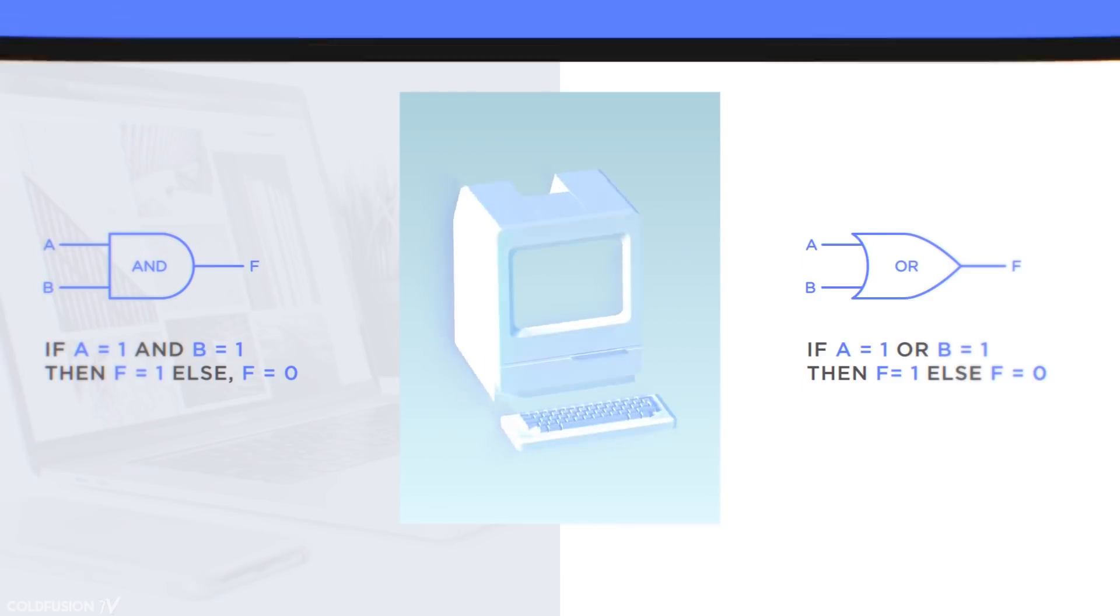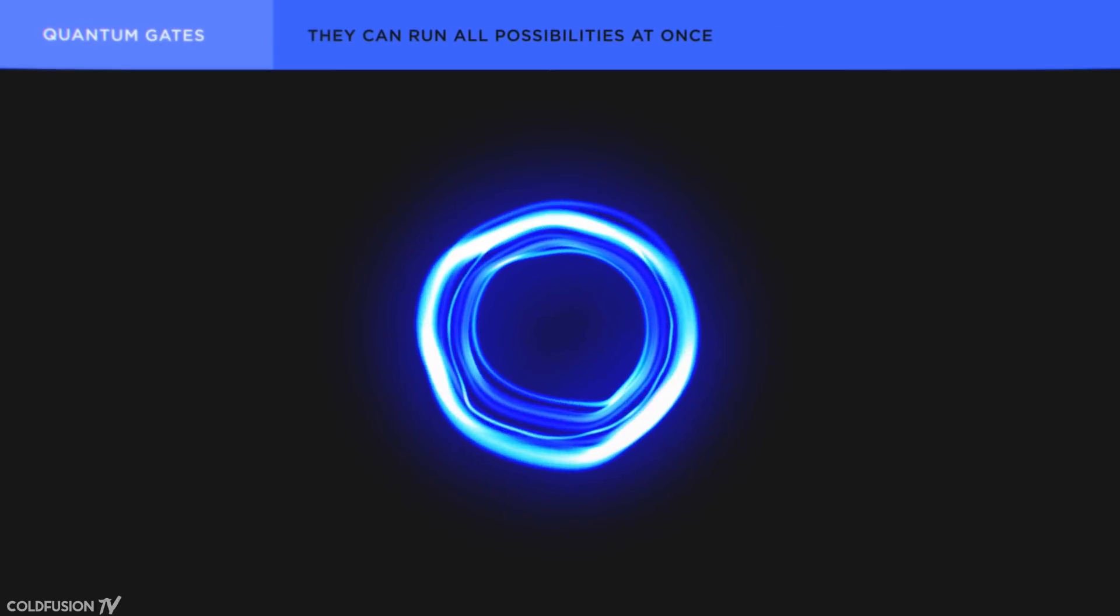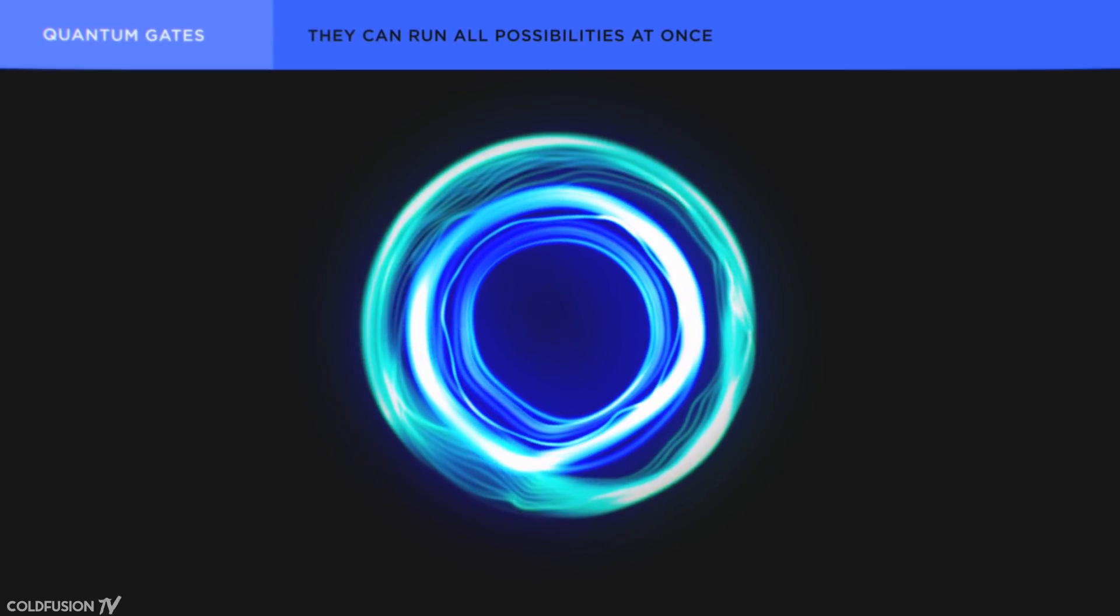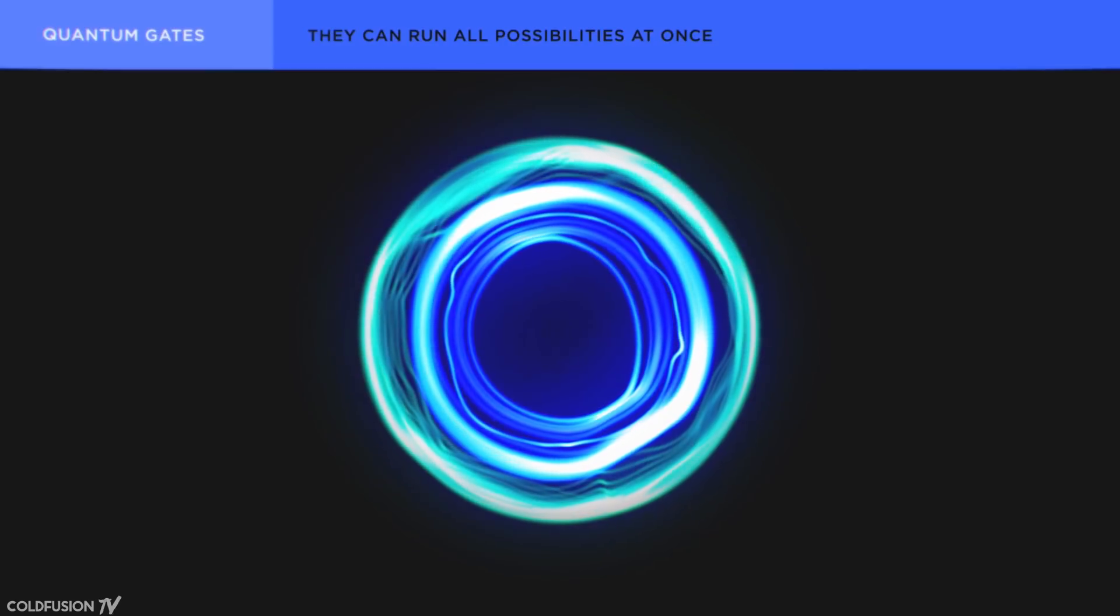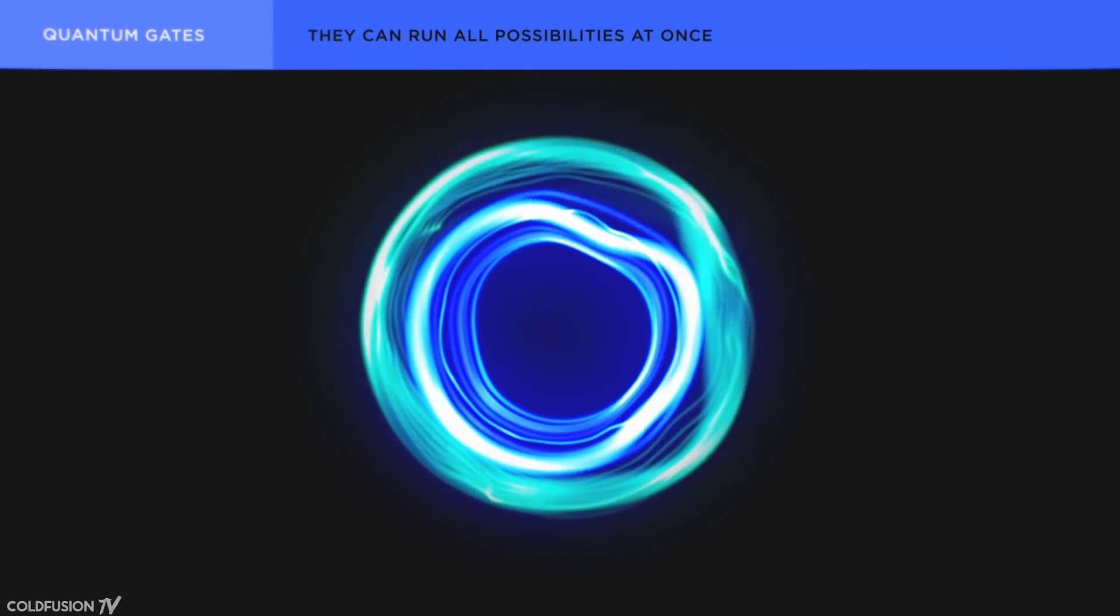Quantum gates, however, can do a lot more. The gates entangle, change probabilities, and collapse superposition qubits to produce results. Simply put, they can run all possibilities at once.